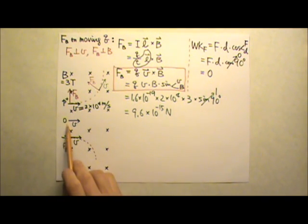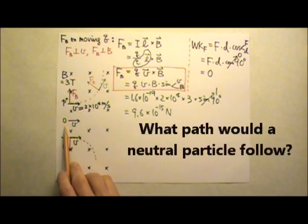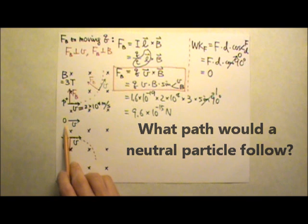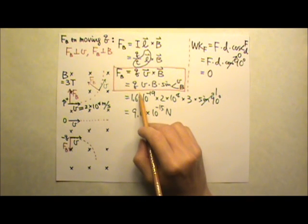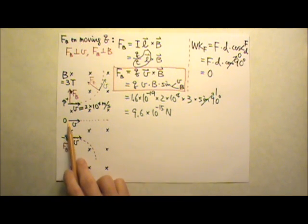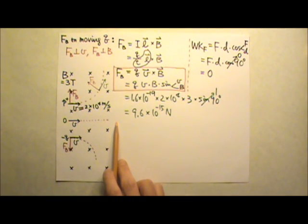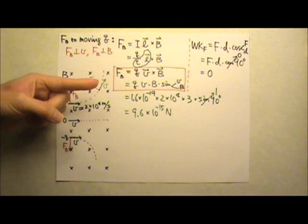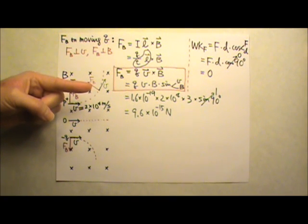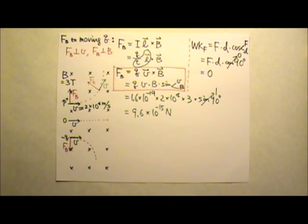What if the particle is neutral with no net charge? If Q is zero, there is no magnetic force, so the neutral particle does not bend — it travels in a straight line. This means if we shoot a particle into a magnetic field perpendicular to the field, we can determine what kind of charge the particle carries by observing whether and how it curves in the magnetic field.